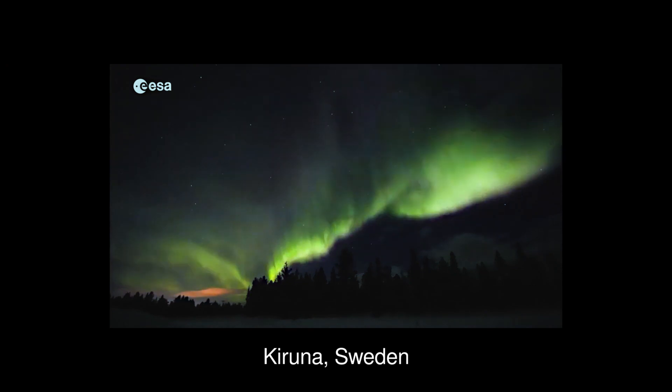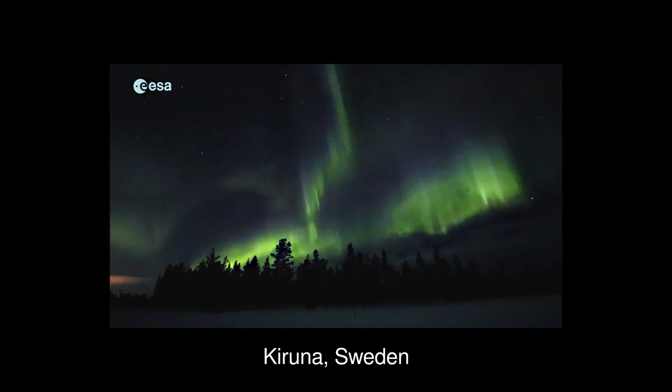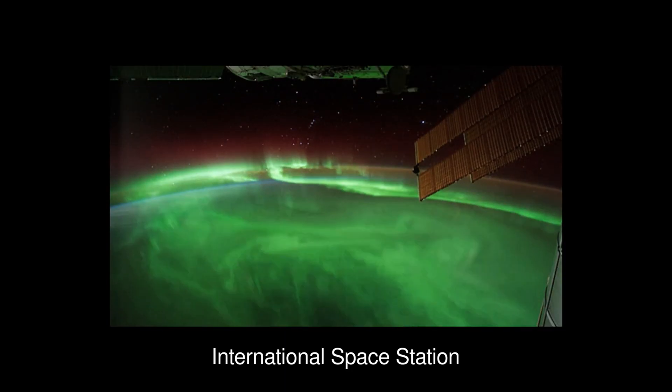Aurorae are beautiful, mysterious, glowing strips of green or purple color that can be observed on the ground. It can also be observed above from space.